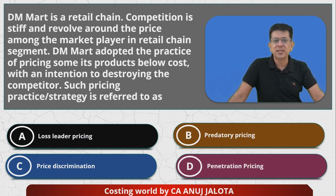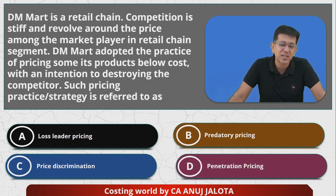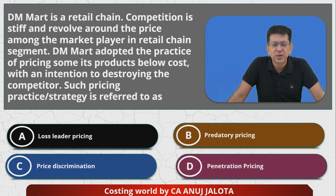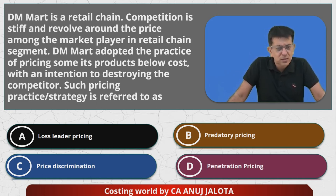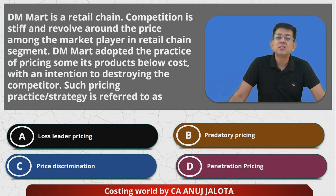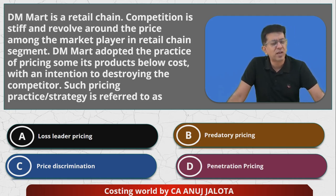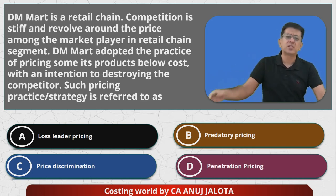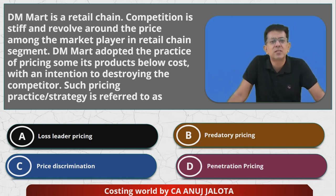So predatory pricing means reducing prices to such an extent that competition gets killed — that's option B. Price discrimination simply means different prices for different customers. Penetration pricing means initially launching the product at a low price to build demand, and once you've captured a good market share, you start increasing the prices.